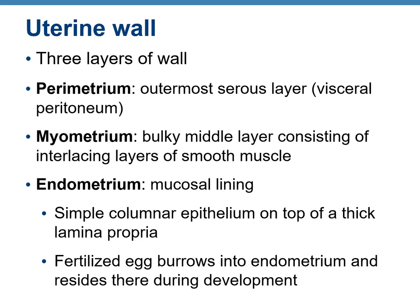The uterine wall has three layers. The perimetrium is the outermost layer and is the visceral peritoneum. The myometrium is the bulky middle layer consisting of smooth muscle. The endometrium is the inner mucosal lining made of simple columnar epithelium on top of a thick lamina propria, which is connective tissue. A fertilized egg burrows into the endometrium and resides there during development.